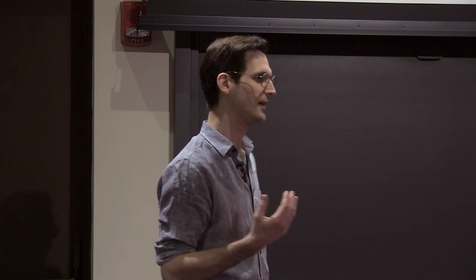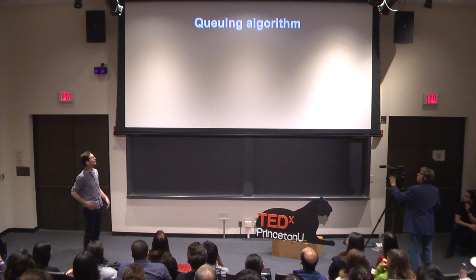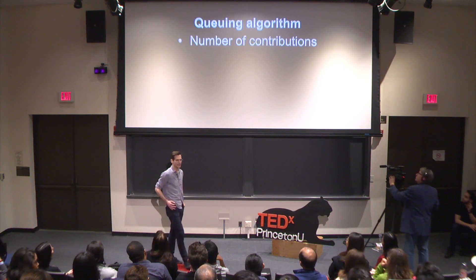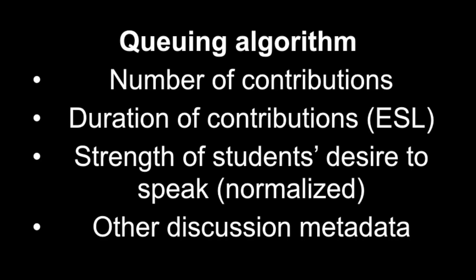We don't know whether it will do anything — we don't know how any of this will work because we've never really studied it. The queuing algorithm is really flexible. It basically takes metadata about the discussion to determine who gets to talk next. It counts the number of times you've wanted to contribute, how long you got to talk for, and the strength of your desire to speak. But you can't game it too much — if you're someone who always thinks what you have to say is unbelievably important right now, it will just start to ignore you.